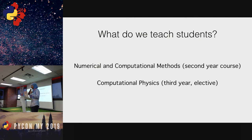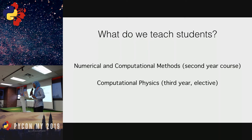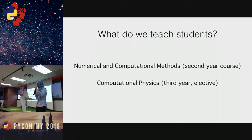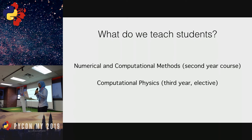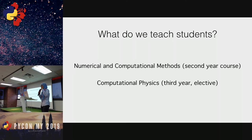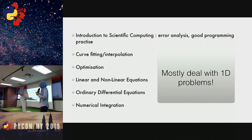In our BSc Physics program at UM, we have two courses. The first is Numerical and Computational Physics, a compulsory second-year course that I now teach. The second is Computational Physics, a third-year elective that I share with a senior professor. There is a clear progression: students take Numerical and Computational Physics as a prerequisite before advancing to the third-year course, introducing coding and libraries in the second year and moving to more complex problems in the third.